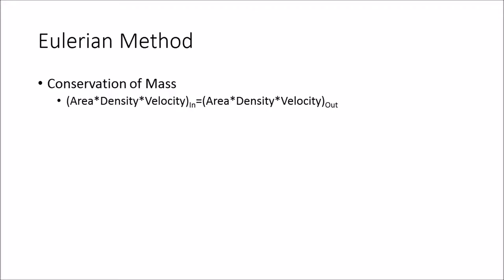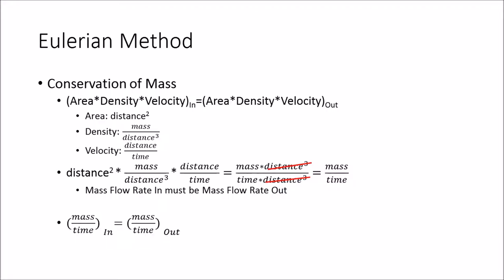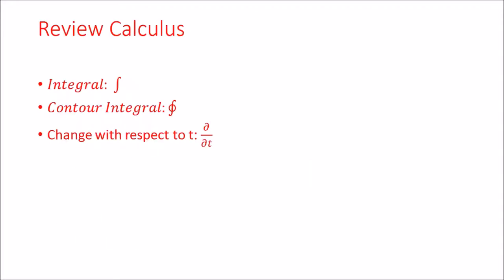If we look at the units of the area, density, and velocity, we can put them into the equation and simplify to find that the mass flow rate in must equal the mass flow rate out. Before going over the two equations which govern incompressible flow, I recommend that you review basic calculus and ensure that you understand integrals and differentials.